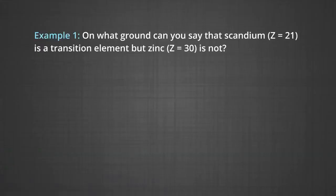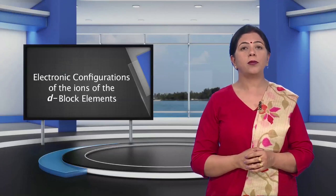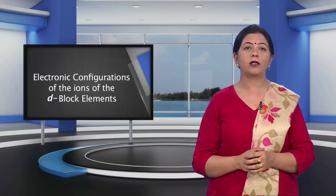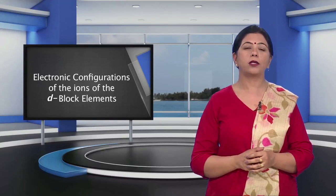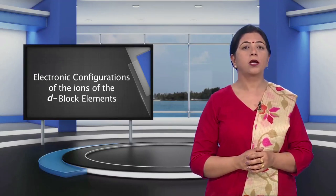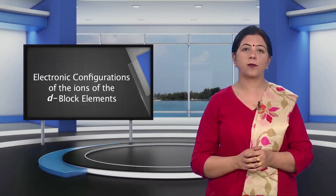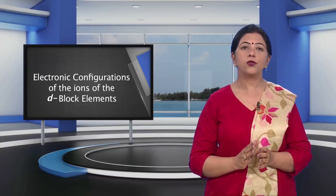Next question: the silver atom has completely filled D orbitals (4D¹⁰) in its ground state. How can you say that it is a transition element? For an element to be termed as a transition element, it should have partially filled D orbitals in its atom or in the commonly found oxidation state. Silver can exhibit a +2 oxidation state, where it has the configuration 3D⁹ in which it has partially filled D orbitals.